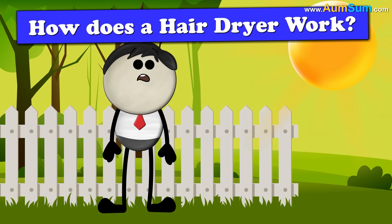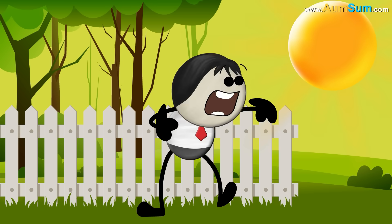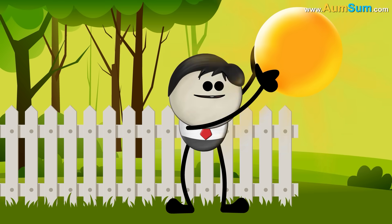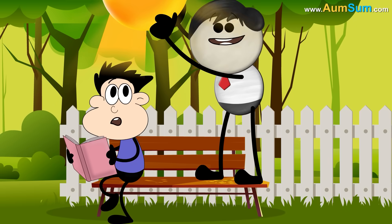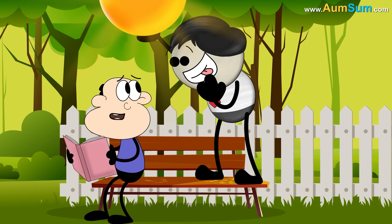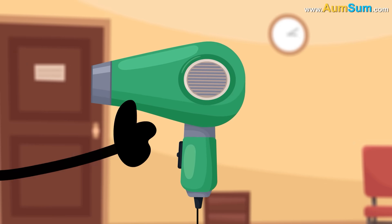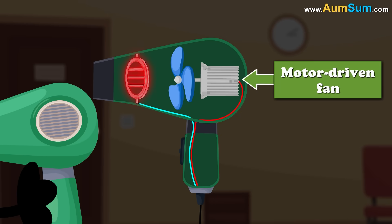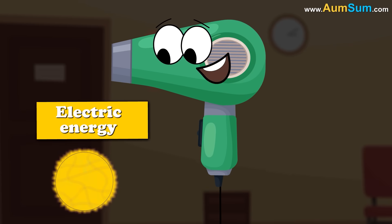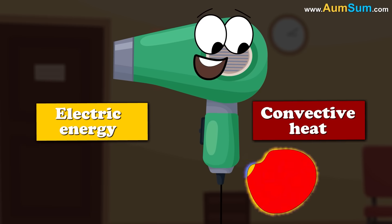How does a hair dryer work? Simple. It is just like the sun. It dries our hair quickly. A hair dryer consists of a motor driven fan and a heating element. Hair dryers transform electric energy into convective heat.